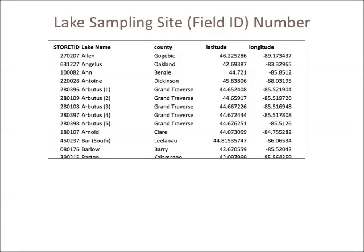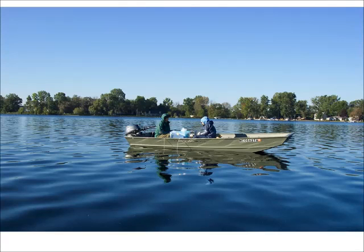Every lake that registers in the CLMP is given a number that represents the sampling location for that lake. This number, called the field ID number, is associated with the latitude and longitude of the deepest location in the lake. All of the sampling done on this lake should be conducted at this location. When you are ready to take a measurement, head out on your boat to the sample point. Because the boat can disturb the water, it is best to turn off the engine and drop anchor upwind of the sample location, and then drift to the proper location. On calm days, coast into the proper location and then wait several minutes for the water to settle.